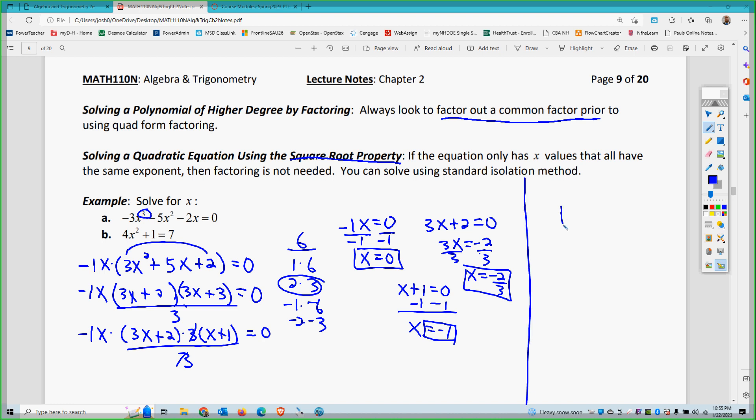And then the other problem. 4x squared plus 1 equals 7. So notice this one only has a singular x term, and if I had more than one x here, it'd be fine, as long as it's the same exponent. So I don't need to factor or factor out here to simply use isolation. So 4x squared equals 6. Divide by 4. So x squared is 3 halves. So I did order of operations backwards. I did level 4 first, which is adding and subtracting. Then I did level 3, which is multiplying and dividing. Then I'll use level 2, which is exponents and radicals. So x equals plus or minus the square root of 3 over 2.